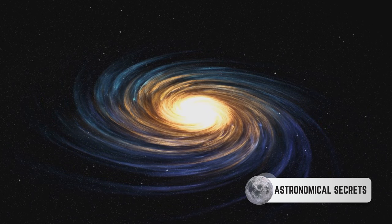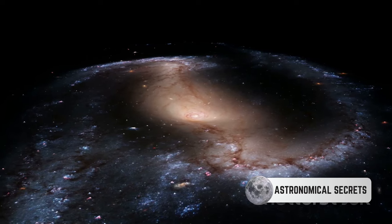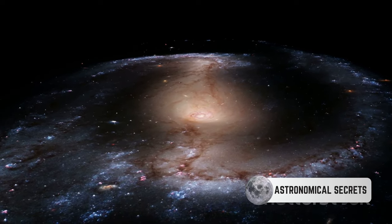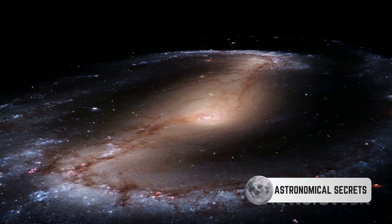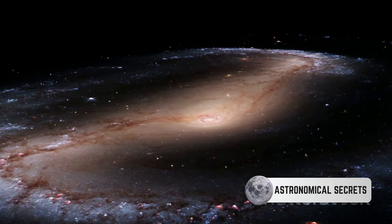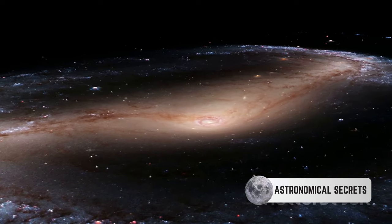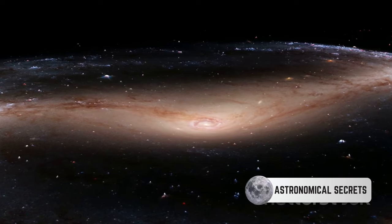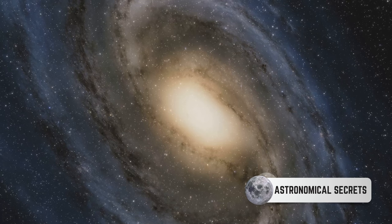These arms are a testament to the dynamic nature of spiral galaxies. As stars and gas move through the disk, they create density waves, much like traffic on a busy highway. These waves compress the gas and dust, triggering the birth of new stars and giving the arms their vibrant starry appearance.